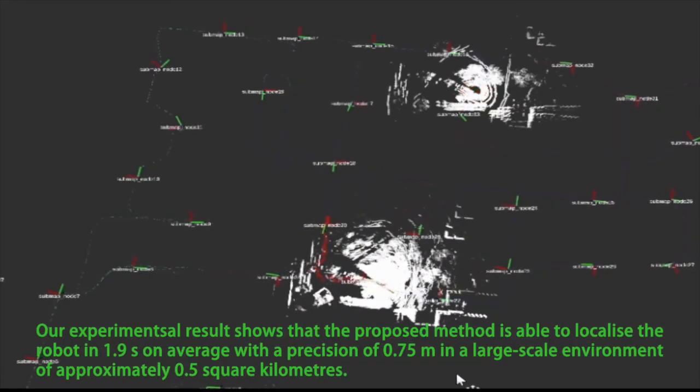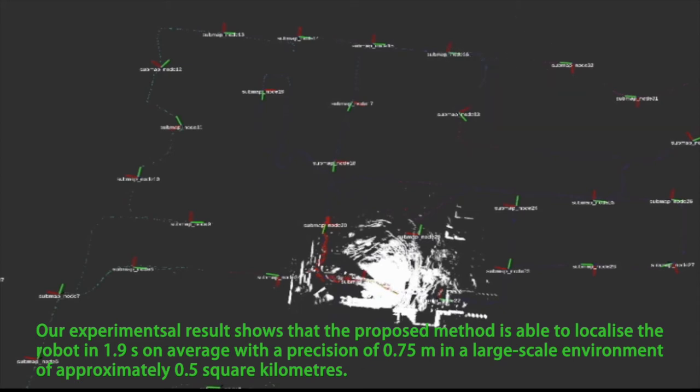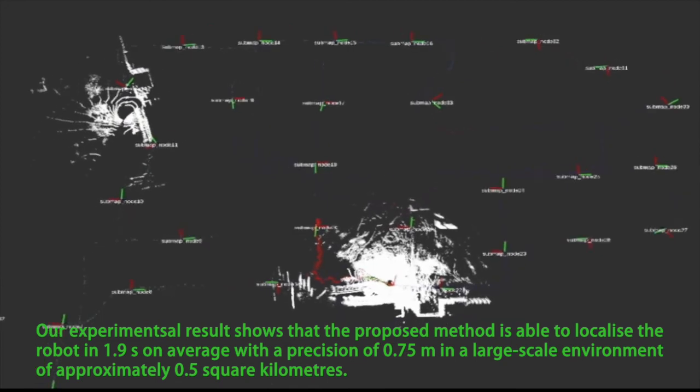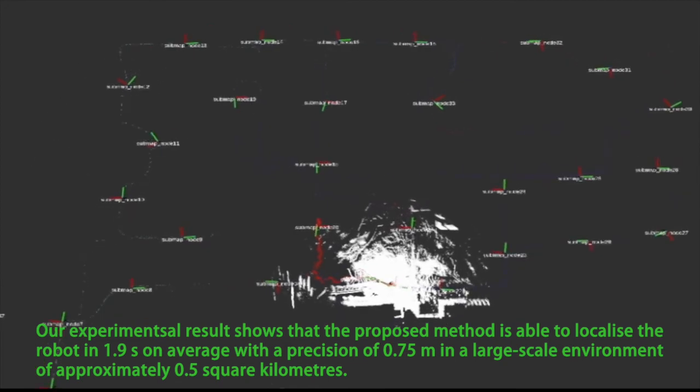Compared to the baseline, our proposed method can localize much faster. Our experimental result shows that the proposed method is able to localize the robot in 1.9 seconds on average, with a precision of 0.75 meters in a large-scale environment. And the environment is about 0.5 square kilometers.